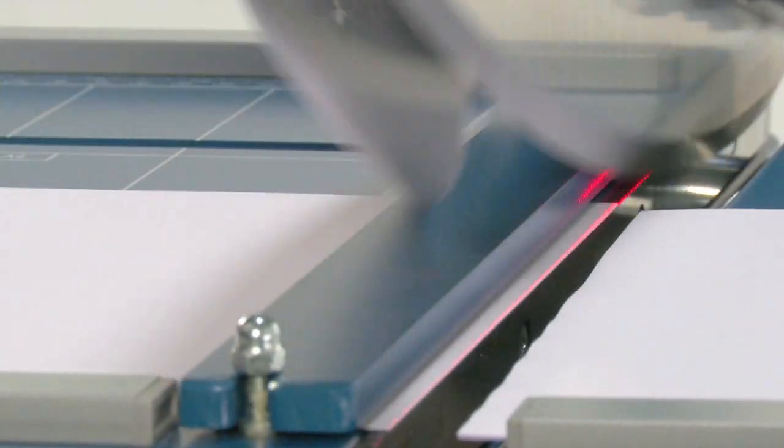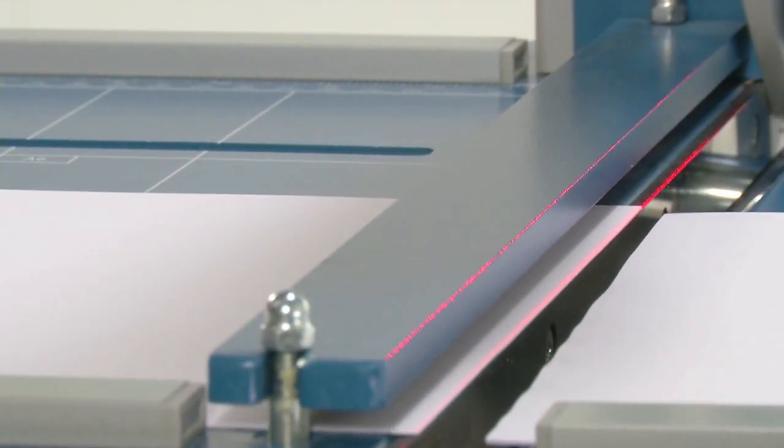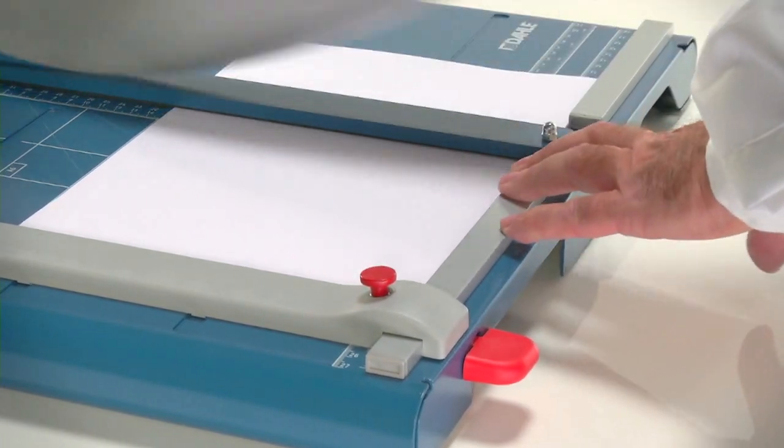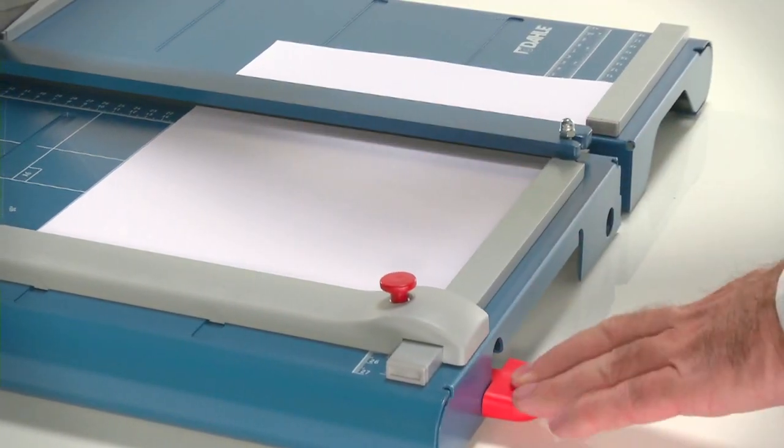Automatic clamping reliably holds the cutting stock in place. You can deactivate clamping for cutting pressure-sensitive materials.